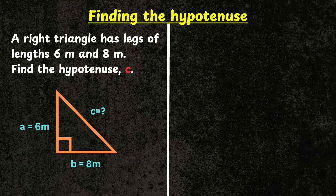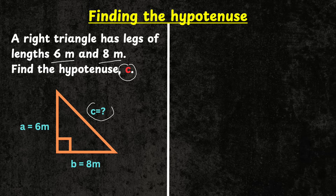In the first problem, it says a right triangle has legs of length six meters and eight meters. We are asked to find the hypotenuse, which is side C, the longest side of the right triangle. Down here we can see the first leg has length six meters and the second leg has length eight meters.